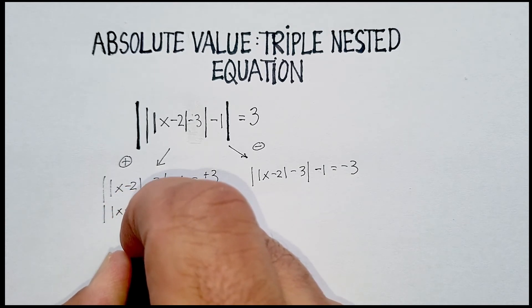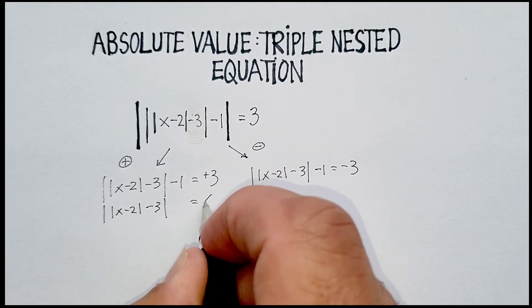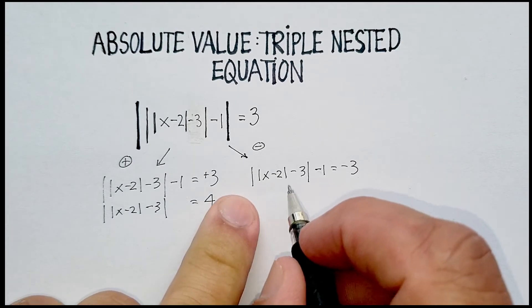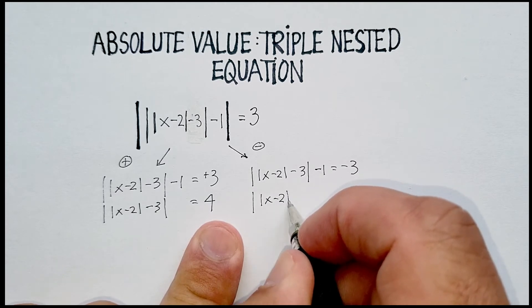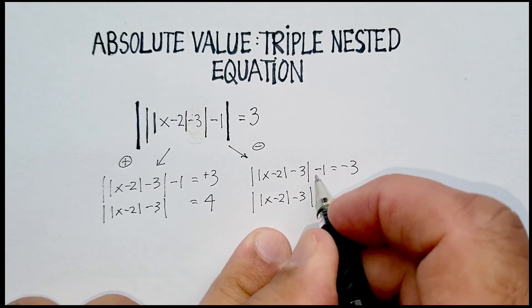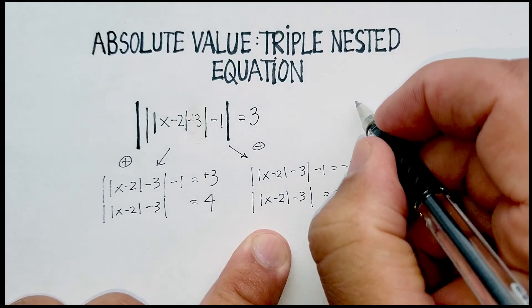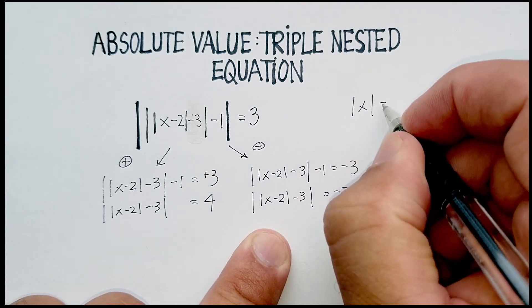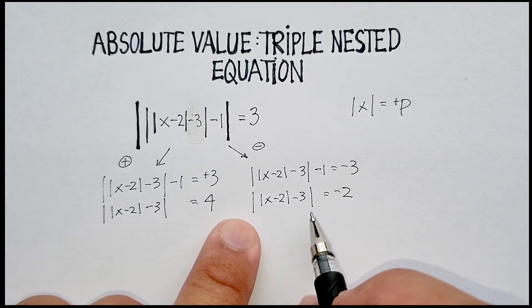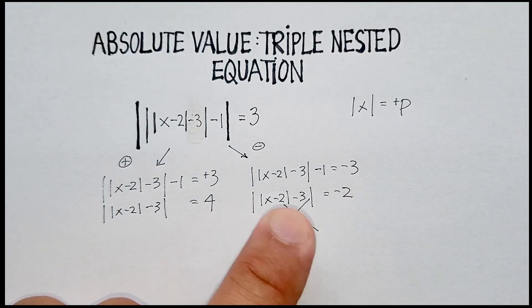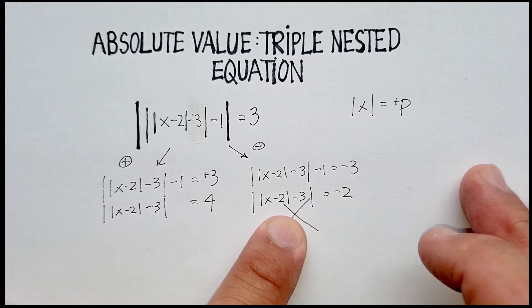So: absolute value of x minus 2, minus 3 — add 1 to both sides — and we get positive 4. Over here, add 1 to the other side: |x - 2| - 3, add 1 to the side, and I end up with negative 2. Remember our initial premise: the absolute value of any number must equal a positive number. In this case it equals a negative number, so we cannot proceed any further here — we stop right here, because a distance away from 0 cannot be a negative number.